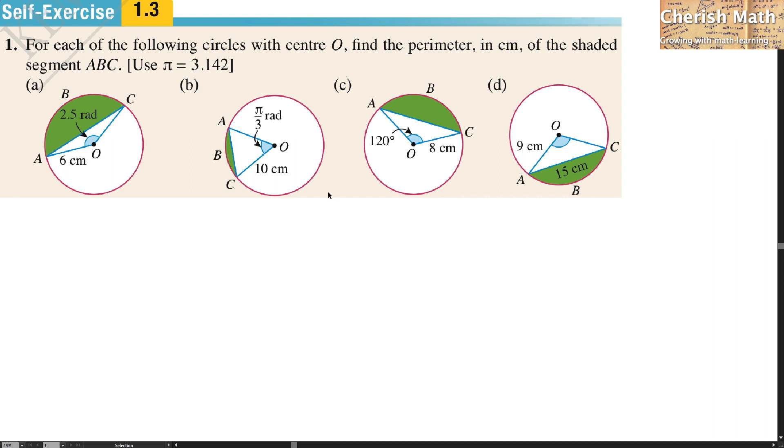To solve the problem here, the formula that I'm going to use is s equal r theta. s stands for the arc of the circle and that is equal to the radius r multiplied by the angle theta which is in radians. And the second formula here is the so-called cosine rule.